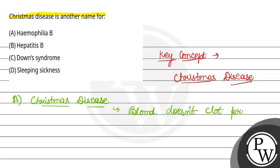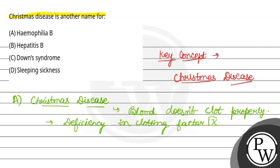If there is an injury, there is bleeding. What is the clotting factor? There is a deficiency of the clotting factor, and when the clotting factor is deficient, bleeding will not stop. This is called Haemophilia or Christmas disease.